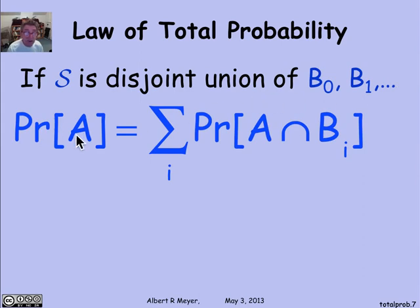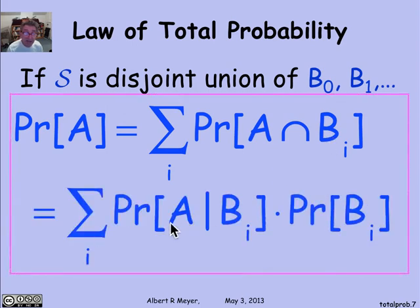Then it's still the case that the probability of A is equal by the sum rule to the probability of these disjoint pieces, the parts of A that are in each of the different blocks of the partition. And reformulating that as a conditional probability, I get the rule that the probability of A is the sum over all possible i of the probability of A given Bi times the probability of Bi.